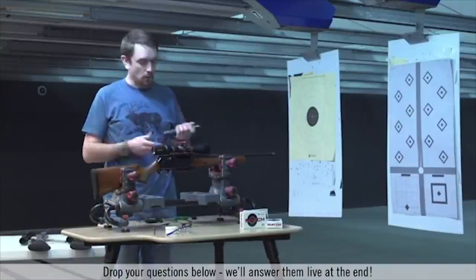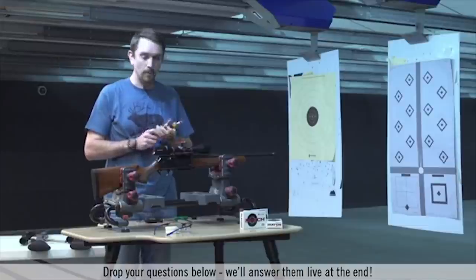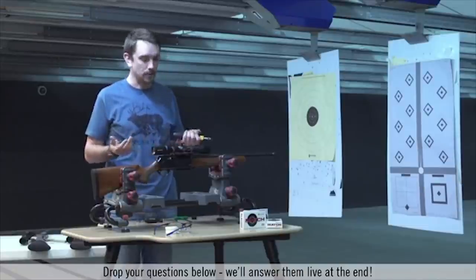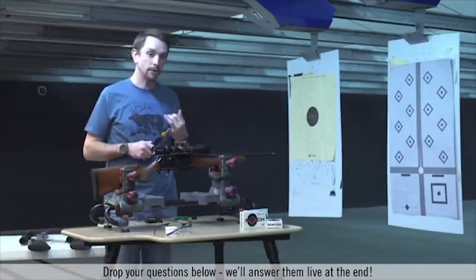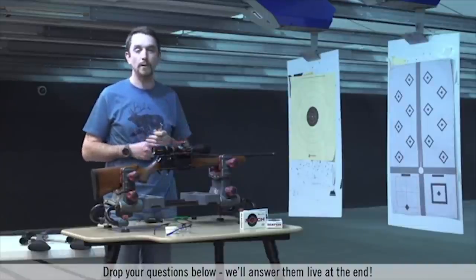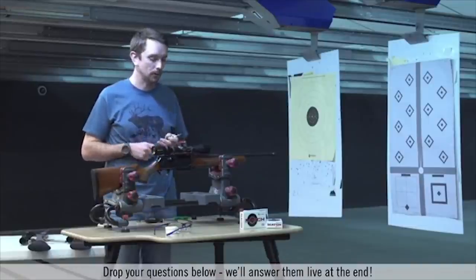Now on Vortex scopes and a lot of other scopes on the market too, ring torque is very critical. One of the more common reasons we see rifle scopes come back to us for service is simply ring over torque. So consult your rifle scope owner's manual. I can tell you for every Vortex Optics rifle scope 15 to 18 inch pounds is the perfect amount of torque to put on them.